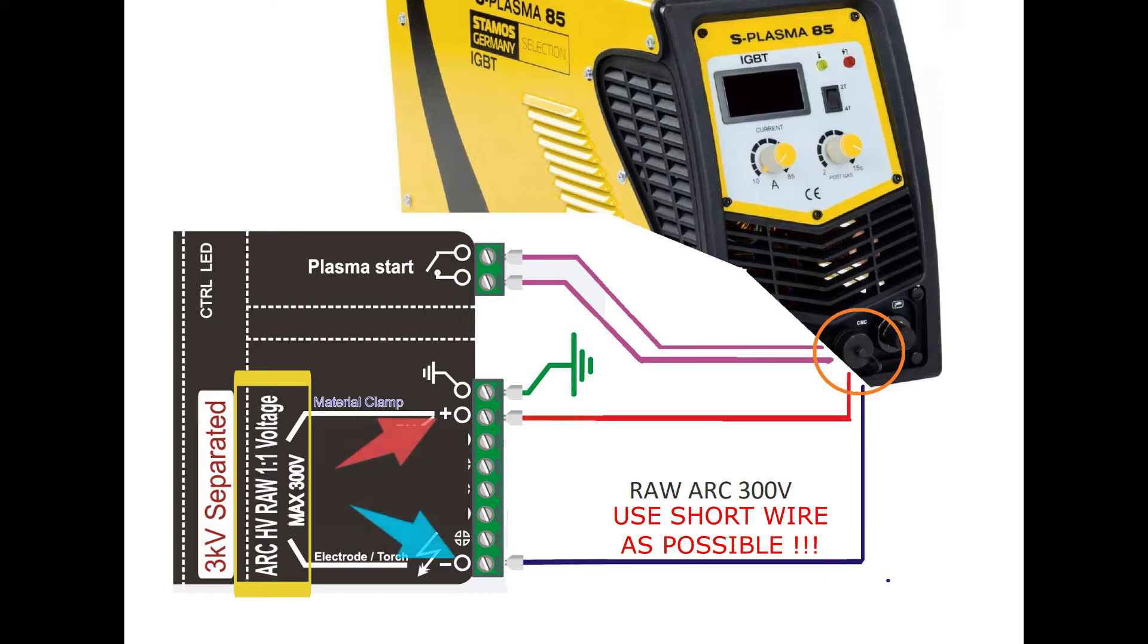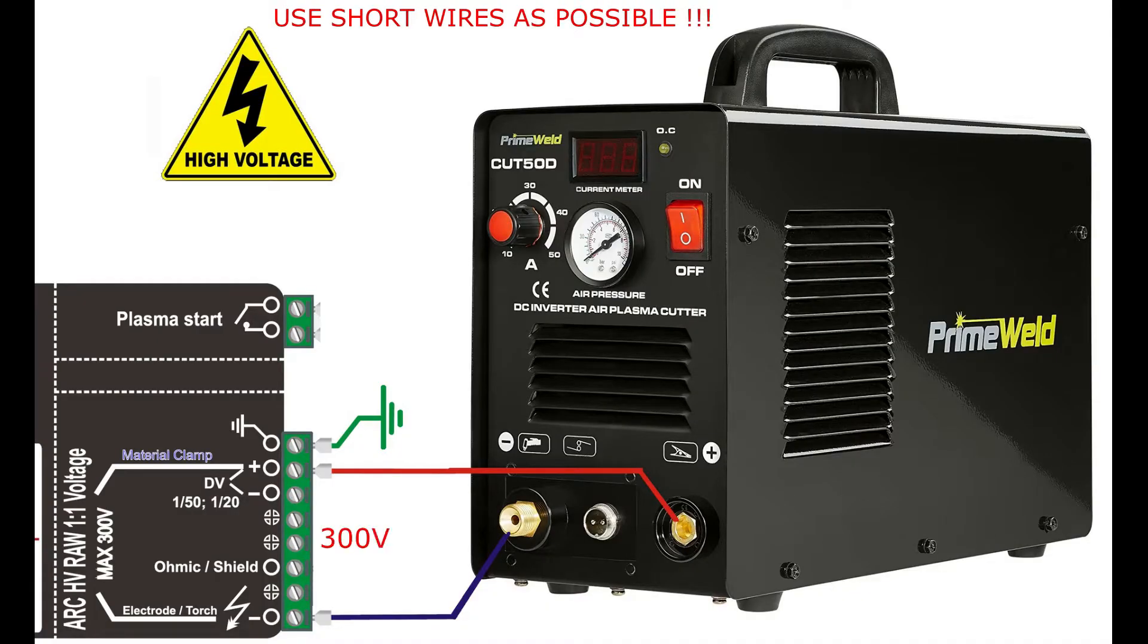Incorrect connection will irreversibly damage the interface and the controller. If the source is not equipped with a dedicated output, it is acceptable to connect the high voltage input directly to the current terminals of the source. In this case, the current wire material clamp should be connected to the plus terminal of the interface. The minus wire should be connected to the terminal wire of the electrode of the plasma torch. This is often the current air connector.